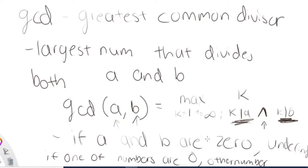If A and B are both zero, the GCD of zero and zero is undefined. If one of the values is zero, then it's the other number. So if A is zero, the GCD of zero and B would just be B. If B is zero, the GCD of A and zero is going to be A. That's basically what GCD means.